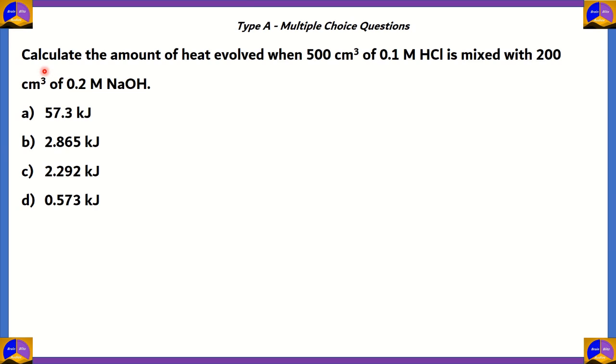The first question for the day is, calculate the amount of heat evolved when 500 cubic centimeters of 0.1 molar HCl is mixed with 200 cubic centimeters of 0.2 molar NaOH. We have four options. We need to find out which of these is the right option. And to start off, let's write the equation where HCl is mixed with NaOH. So, HCl plus NaOH is NaCl plus H2O.